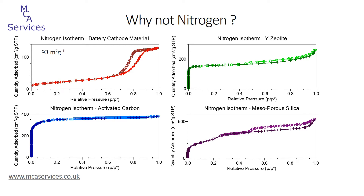93 square meters per gram for the cathode material, 502 for the zeolite, 1,300 for the activated carbon, and 950 for the mesoporous silica.